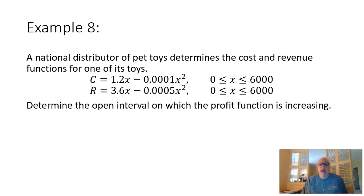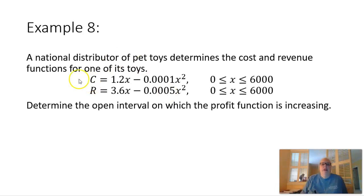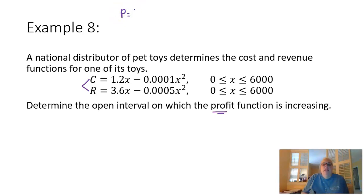Here's our last example, example 8 — an application problem. A national distributor of pet toys determines cost and revenue functions: c equals 1.2x minus 0.0001x squared, where x is between 0 and 6,000, and r equals 3.6x minus 0.0005x squared, where x is between 0 and 6,000. We want to determine the open interval on which the profit function is increasing. We're given cost and revenue, but need the profit function, which equals revenue minus cost.